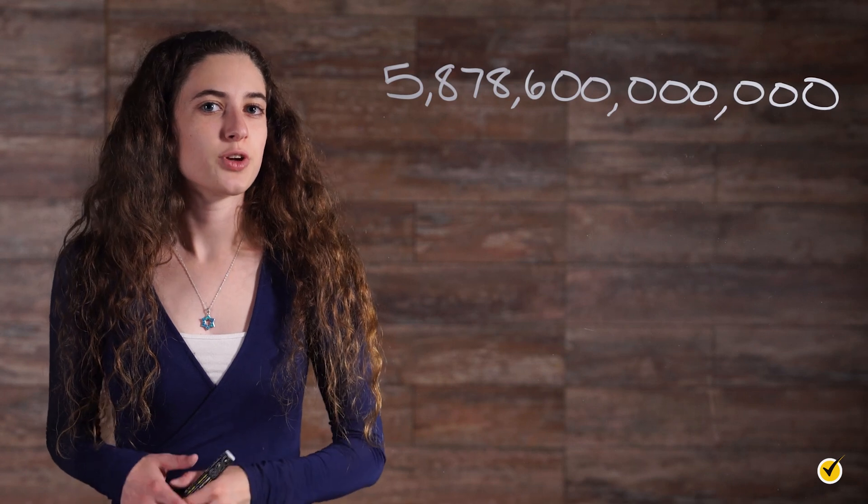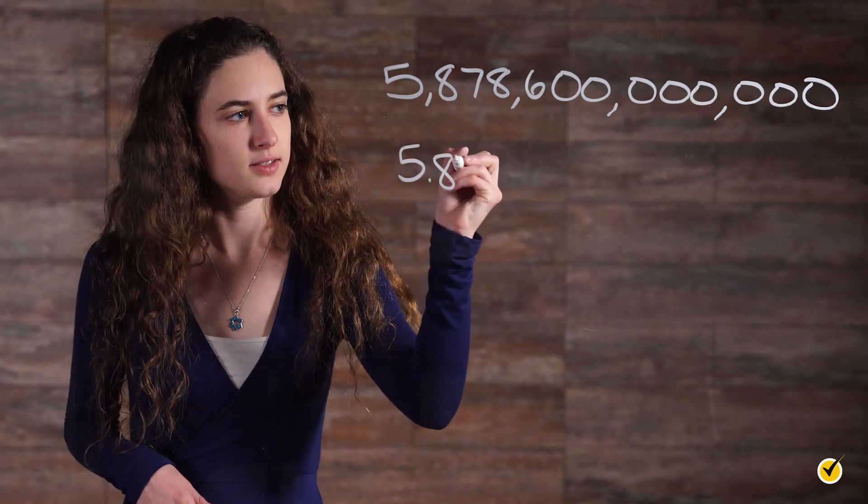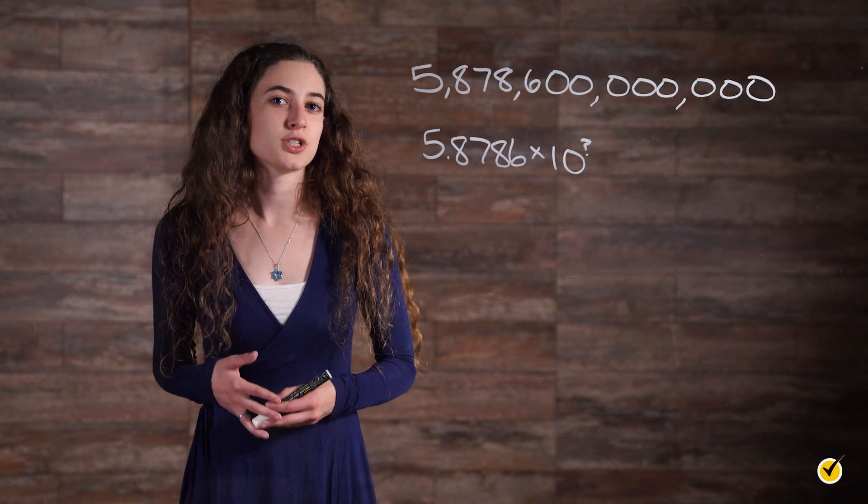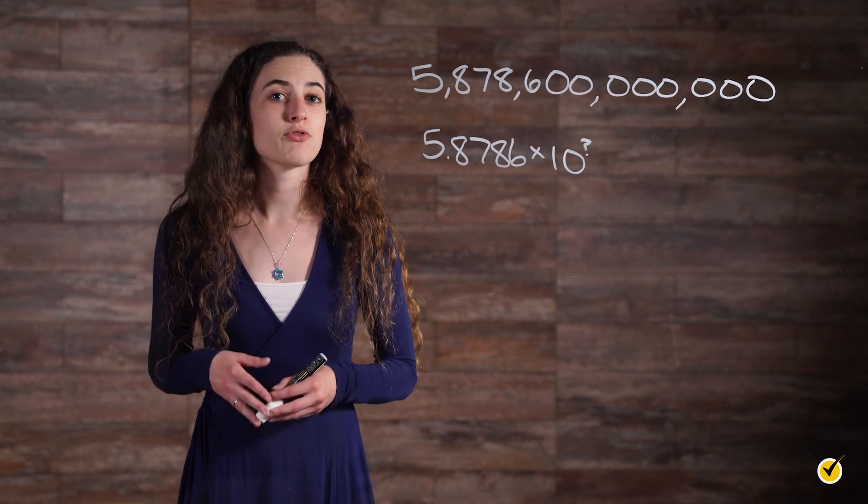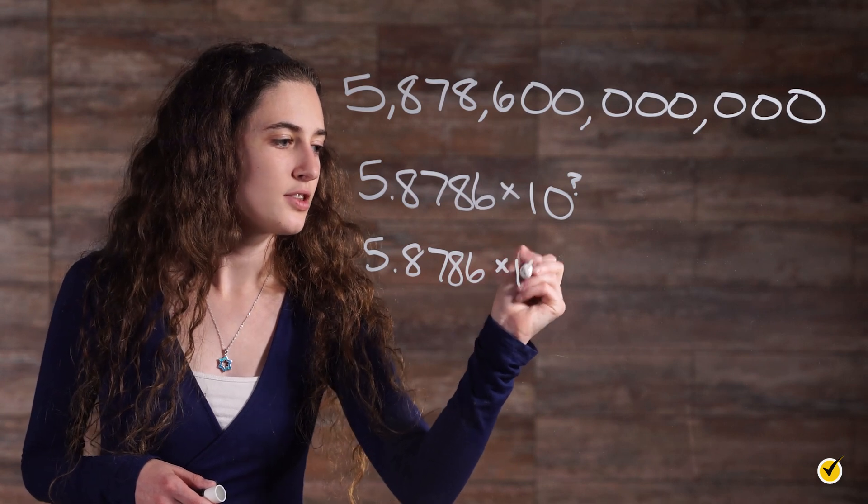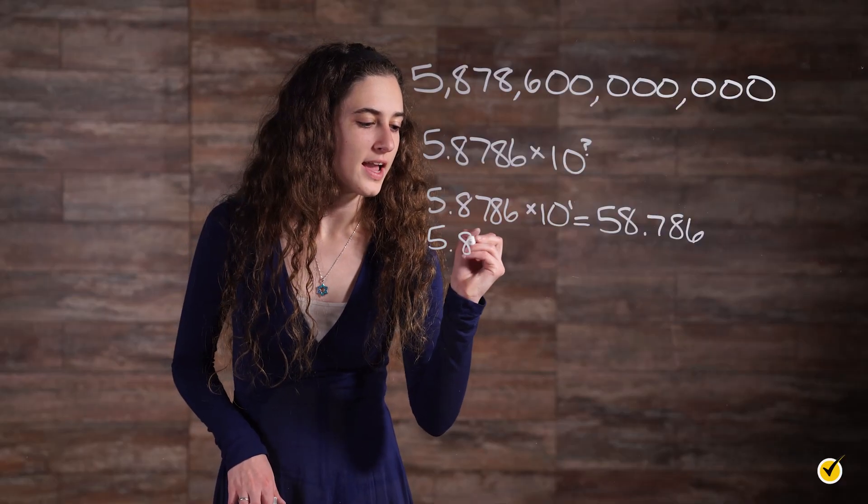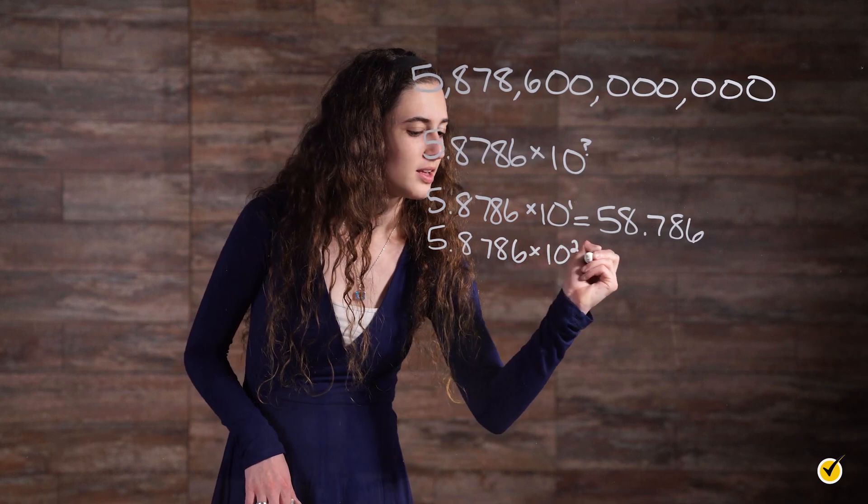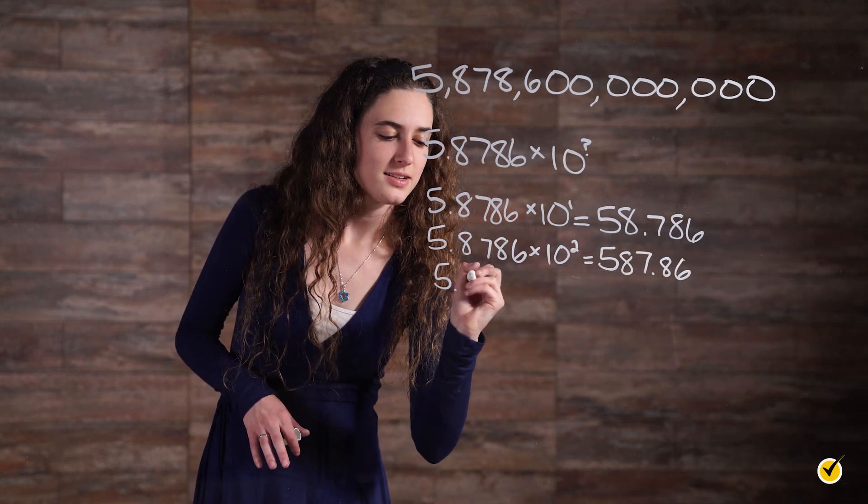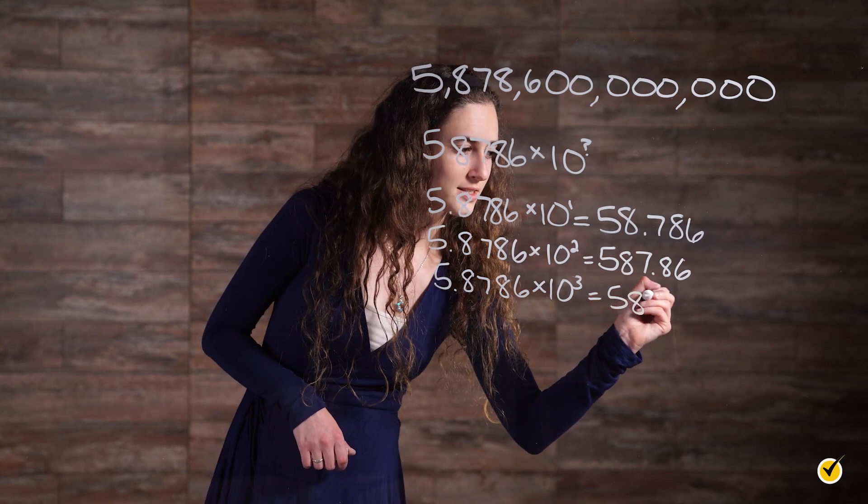Our decimal must be greater than or equal to 1 and less than 10. So we always start from the 1's place. Here, we have 5.8786 times 10 to the something power. This is where we count the number of times our decimal is multiplied by 10. We need to count from the decimal we created to the end of the number. So 5.8786 times 10 to the 1 is equal to 58.786, times 10 squared is equal to 587.86, and times 10 cubed is equal to 5878.6.